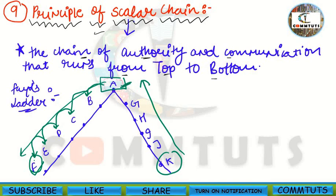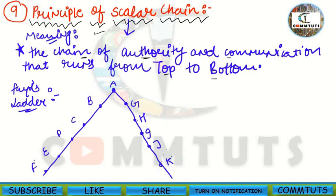Similarly, if Mr. K needs to communicate something, he will not go directly to Mr. A. According to the Principle of Scalar Chain, K will first inform J, J will pass it to I, I will tell H, H will tell G, and so on until the message reaches the intended person — because all subordinates must first transfer their message to their immediate superiors.